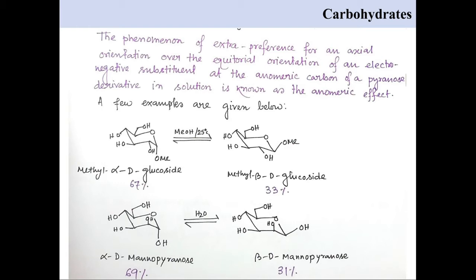Here, another example is given in which alpha-D-mannopyranose exists 69% and the beta-form is 31%.